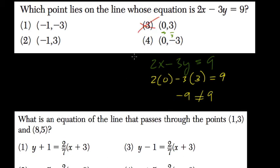Let's try choice 4. We have 2 times 0 minus 3 times negative 3, does that equal 9? 2 times 0 is 0 minus 3 times negative 3 or plus 9. And that does equal 9. 9 equals itself. So that's choice number 4.